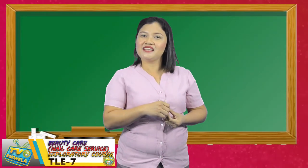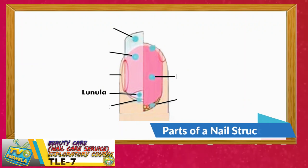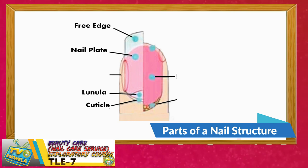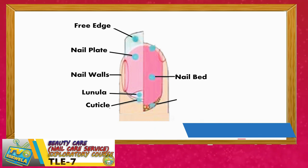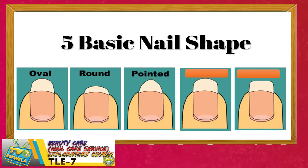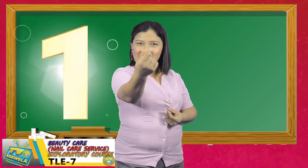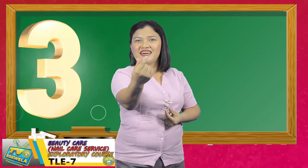Time is up, my dear students! Let us reveal the correct answers and please check honestly your work. For the first picture, we have here the parts of a nail structure: lunula, cuticle, nail plate, free edge, nail bed, nail walls, and matrix. For the second picture, the answers are oval, round, pointed, squoval, and the last one is square. I will give three finger hearts for those who got perfect. One, two, and three. Congratulations!